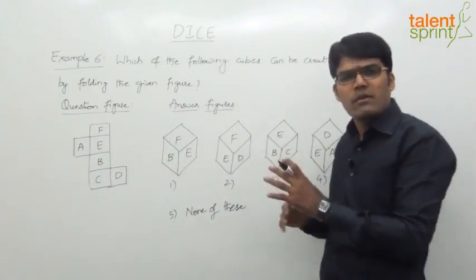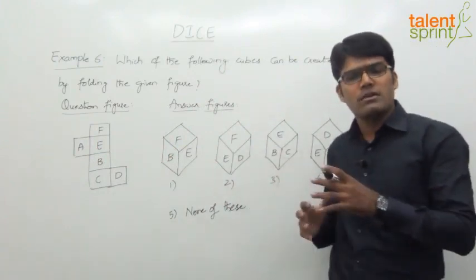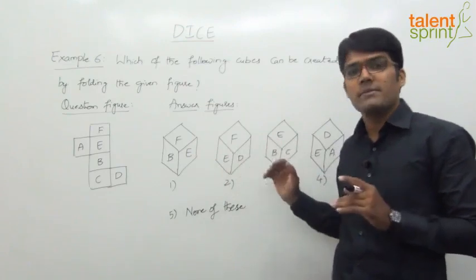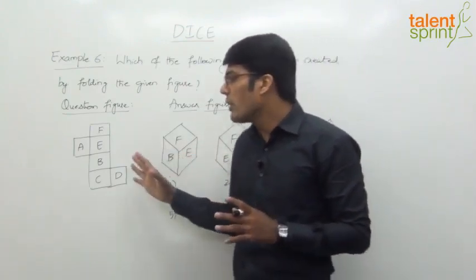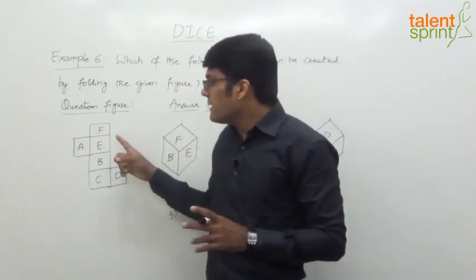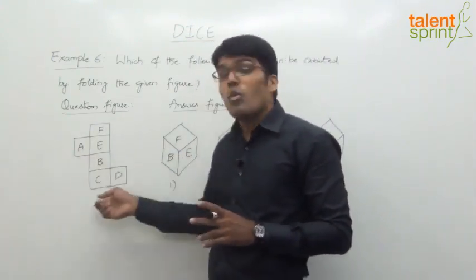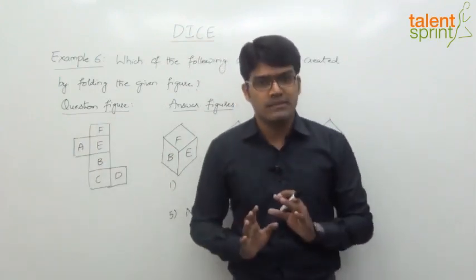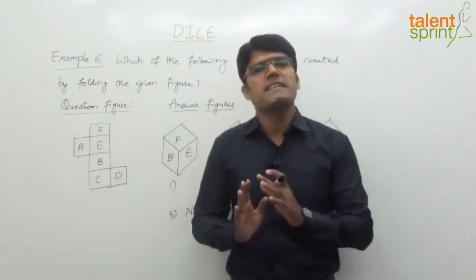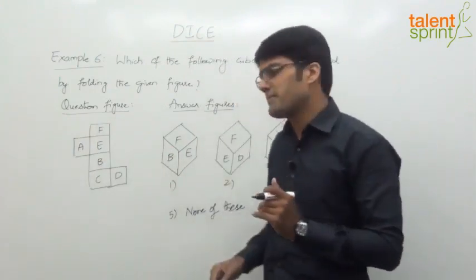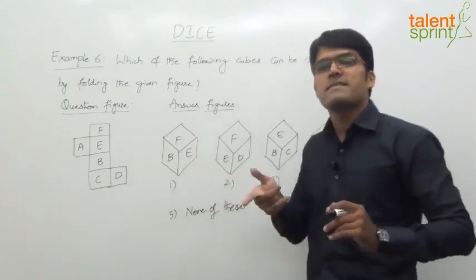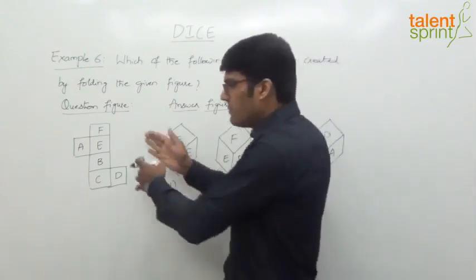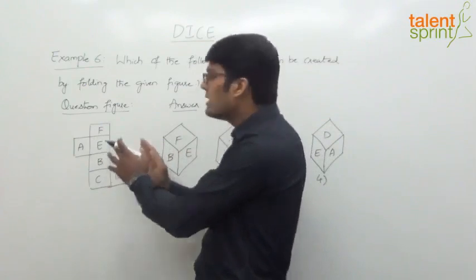Now this is very simple. Since we have already solved a number of questions on dice, it will be very easy to understand. The only point here is, in such type of cases, when an open figure is given to you, you need to understand what are the opposite faces — and that is very easy to identify. Remember, alternate faces are all opposite faces. There are different forms possible.